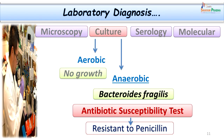The pus was further subjected to bacterial culture for both aerobic and anaerobic organisms. As it is a case of brain abscess, anaerobic organisms are quite important, so aerobic and anaerobic cultures were set up in parallel. At the end of 24 hours, no aerobic organisms grew from the pus. However, at the end of 48 hours, we could grow Bacteroides fragilis.